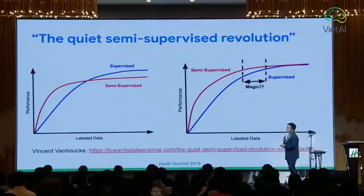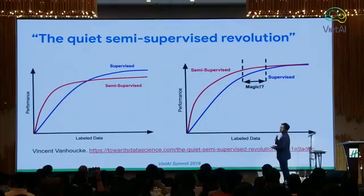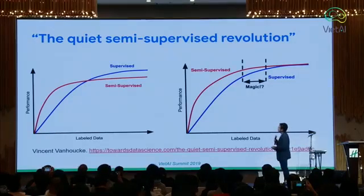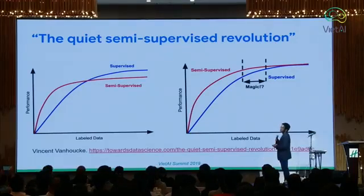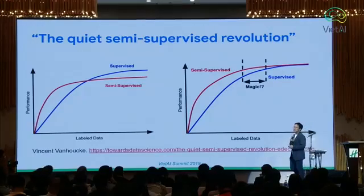Andrew Ng worked on manufacturing — helping workers decide whether a phone is okay or if there's a scratch on it. And the relationship between supervised learning and semi-supervised learning is that when you look at how much labeled data you have: when you have little data, semi-supervised learning works better than supervised learning, but the performance is still very low. And by the time you get more and more data, it's simply better to use supervised learning because it's simpler. But recently, there's a metric where the curve of semi-supervised learning actually goes above supervised learning when you have a bit more data. Someone called this a 'quiet semi-supervised learning revolution.'